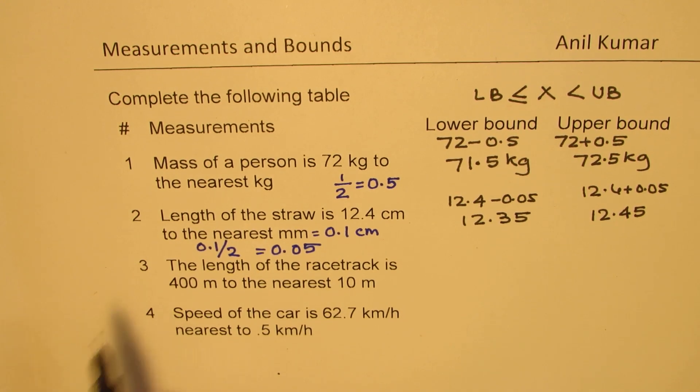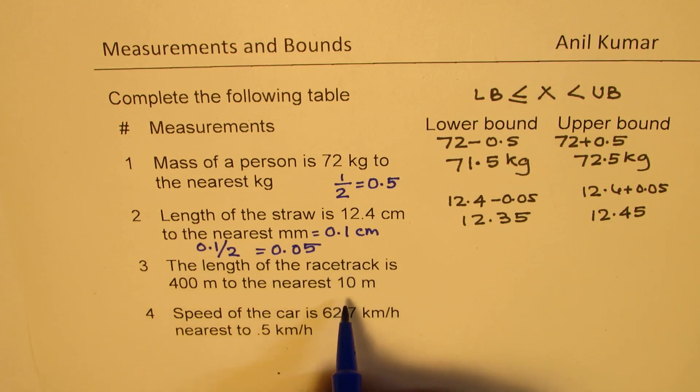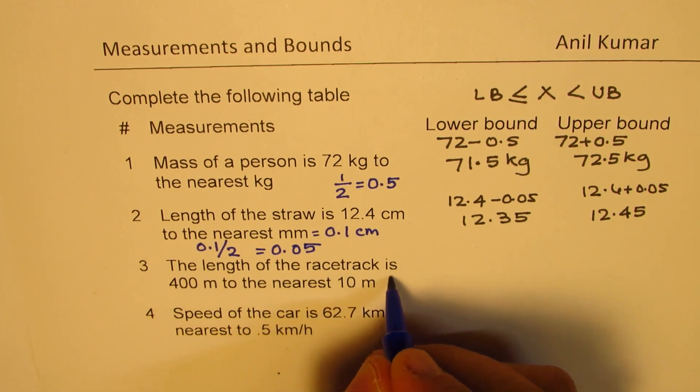Question 3. The length of a racetrack is 400 meters to the nearest 10 meters. So what should you add and subtract? So you have to divide 10 by 2, so half of it, right, which is 5.